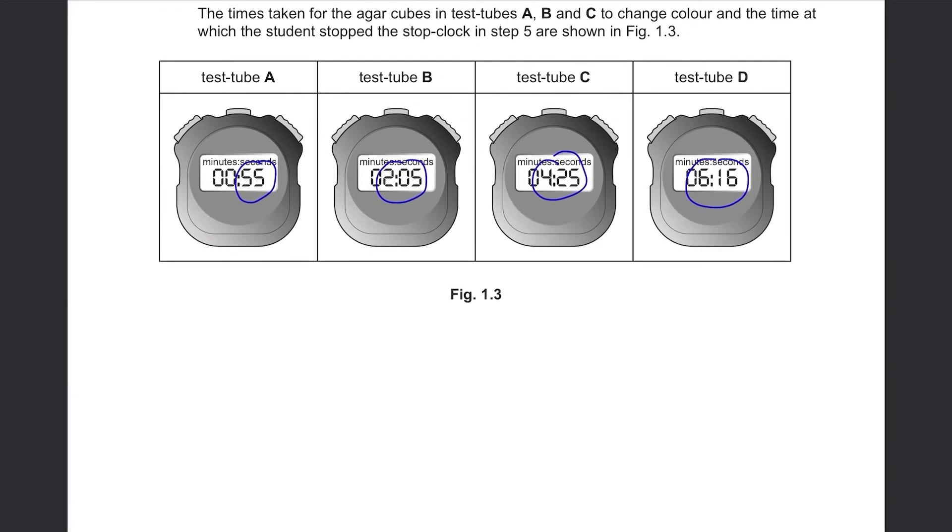Let's first change these to seconds, 55, then 2 minutes 5 seconds is 2 times 60 plus 5, 125. 4 times 60 plus 25, 265. Then this is just over 6 minutes, so you just have to write like this.